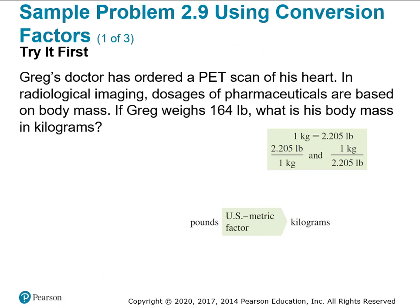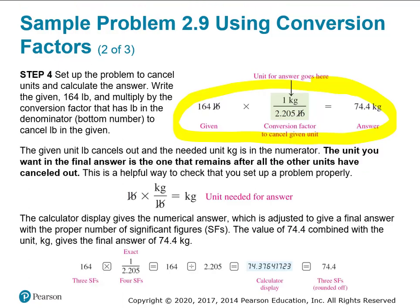Here's a practice problem: Greg's doctor had a PET scan of his heart. He weighs 164 pounds. What is his body mass in kilograms? Given that conversion factor, the answer is on the next page. You can check that answer.